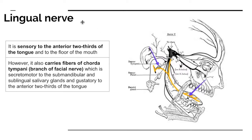Moving on to the lingual nerve. The lingual nerve is sensory for the anterior two-thirds of the tongue and the floor of the mouth. However, as it approaches this area, it also carries fibers from the chorda tympani, which is a branch of the facial nerve or the seventh cranial nerve. This is secretomotor to the submandibular gland and the sublingual salivary gland, and gustatory to the anterior two-thirds of the tongue.